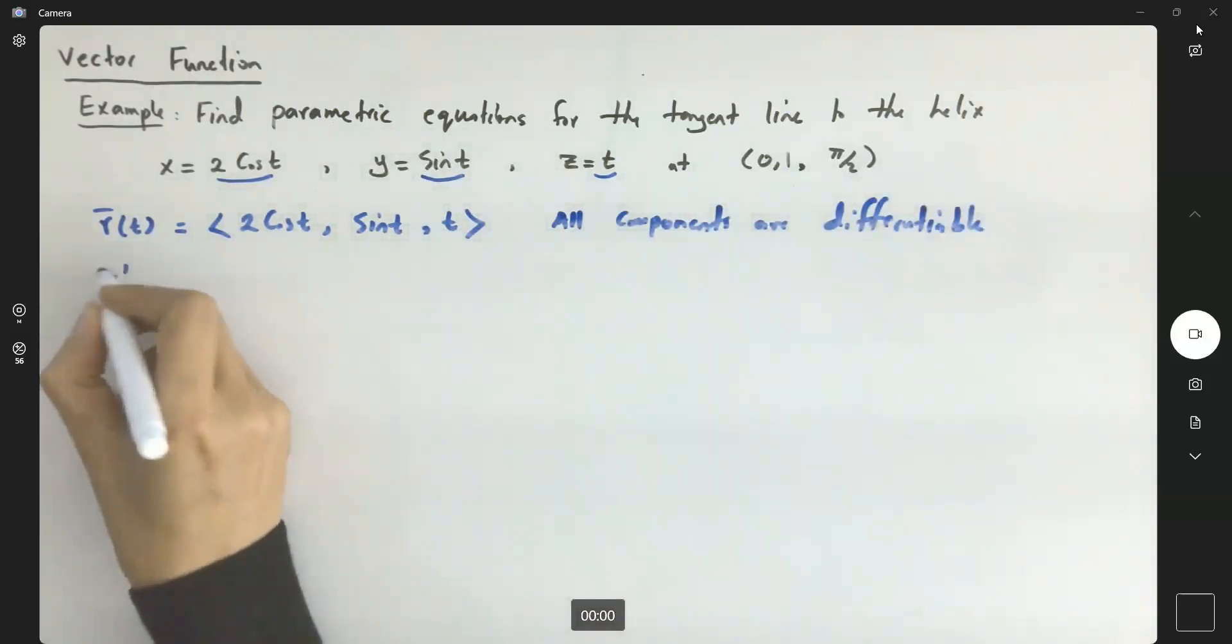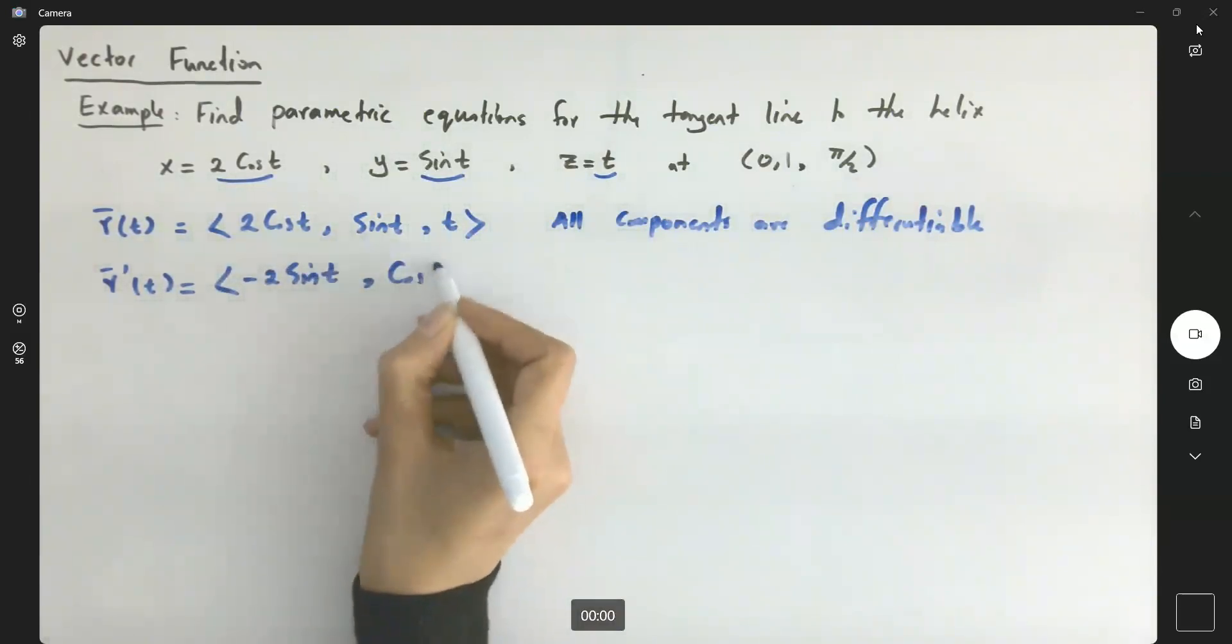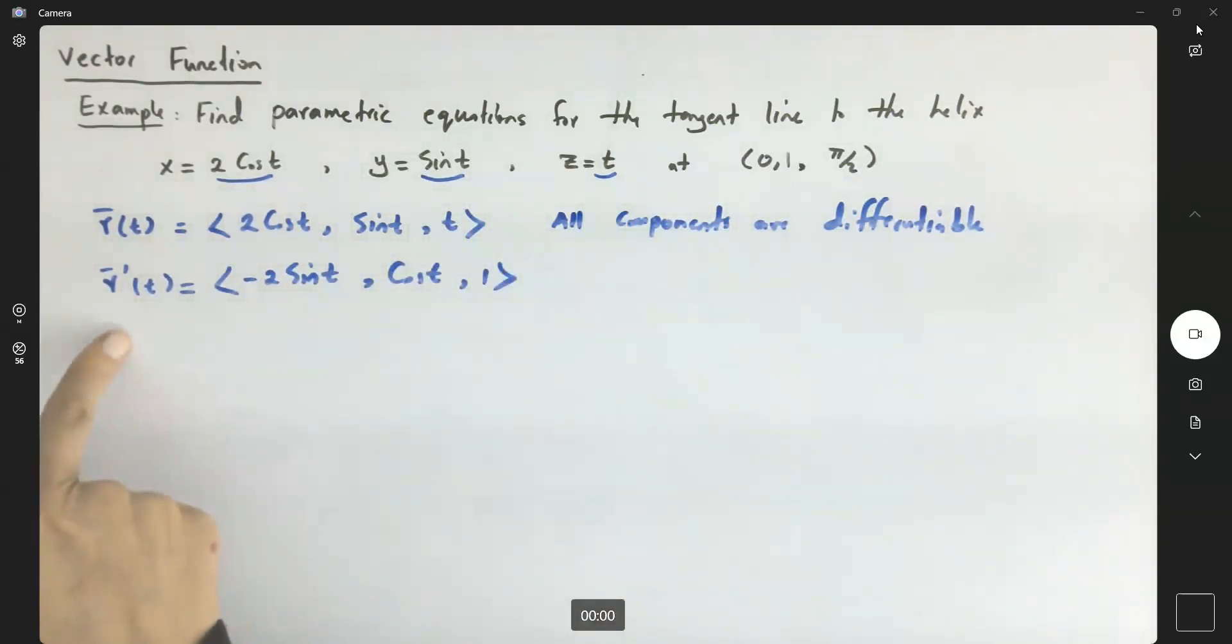So r prime of t becomes, well, here you have negative 2 sine t, here we have cosine t, and the last component of the derivative of this function is 1. Very good.